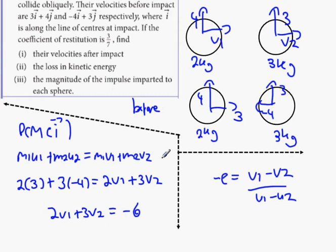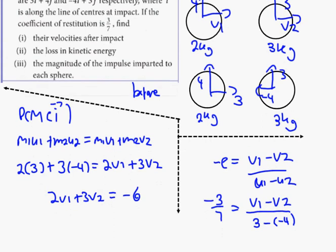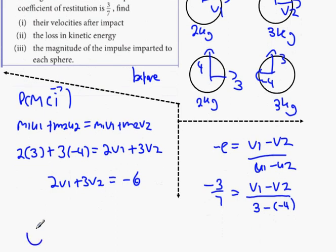Our E value is minus 3 over 7. So minus 3 over 7 equals V1 minus V2 over U1 minus U2. What's U1 minus U2 on the bottom? It's going to be 3 minus minus 4. What does the 3 minus minus 4 represent? 7. It's how fast the I-components are charging into each other - 4 to the left, 3 to the right. It's coming in at 7. That's why it's called a relative velocity. So you cross multiply this 7 upwards.